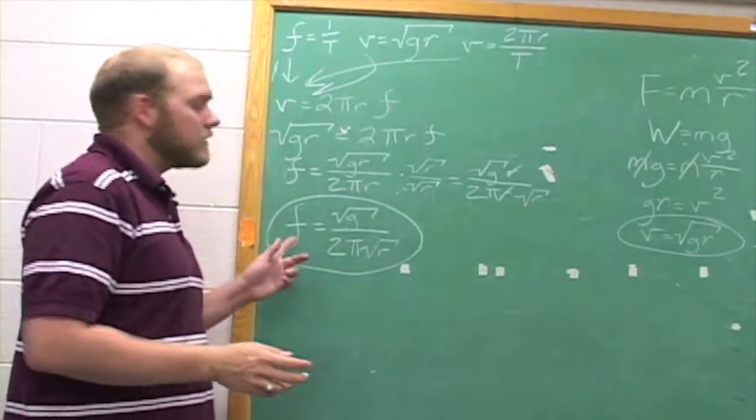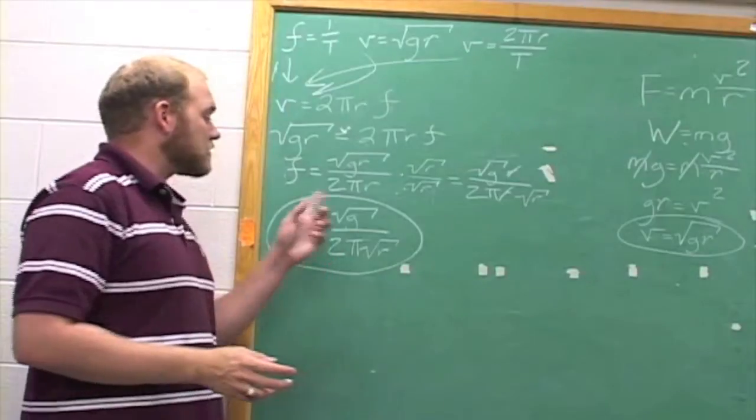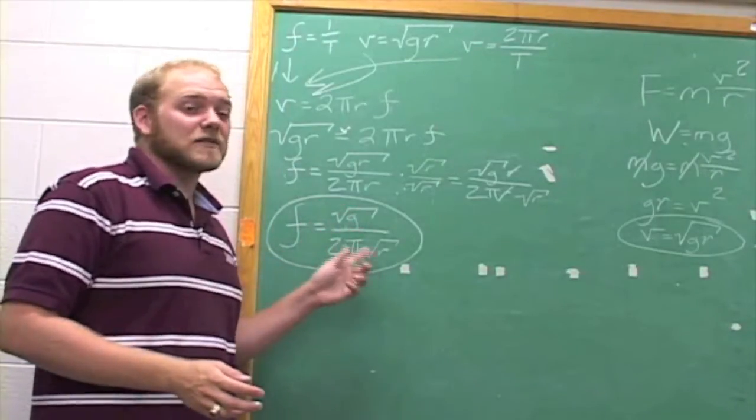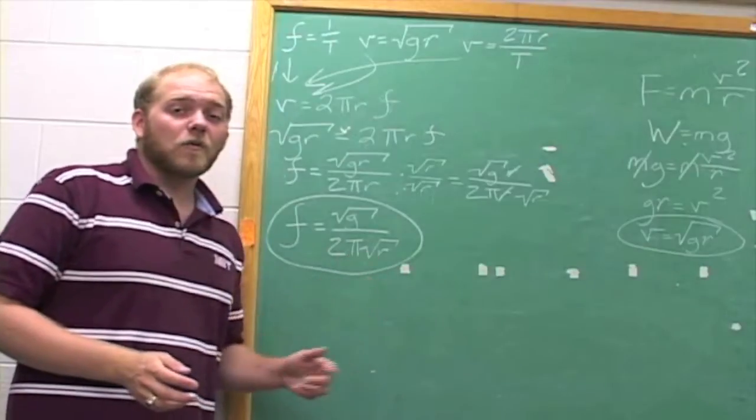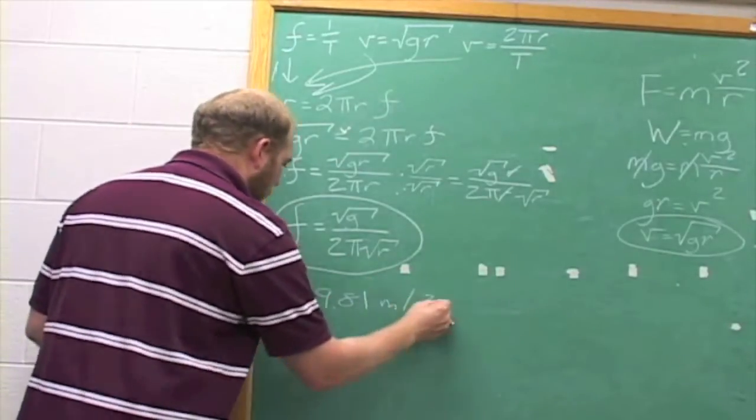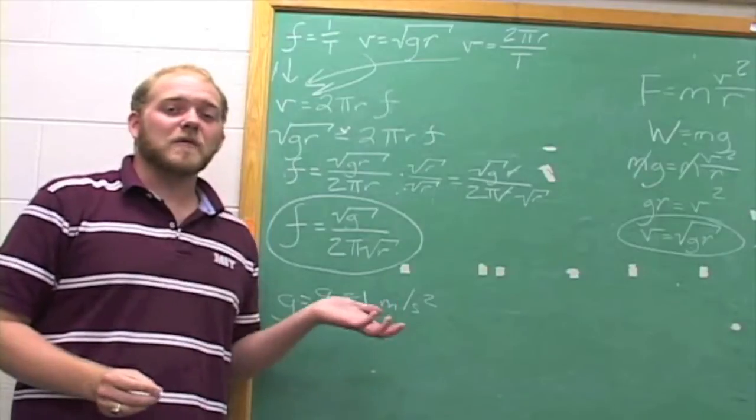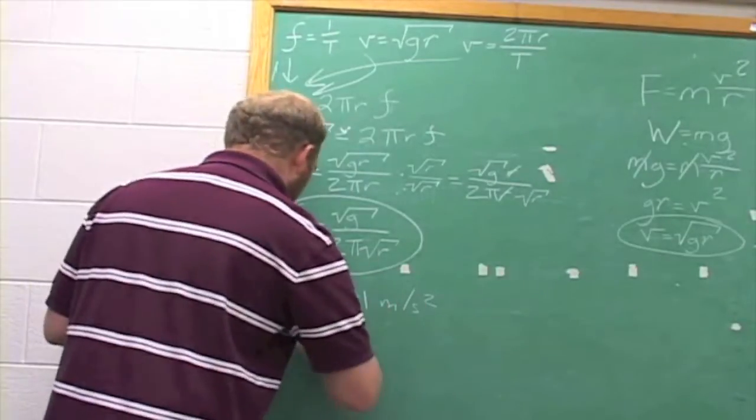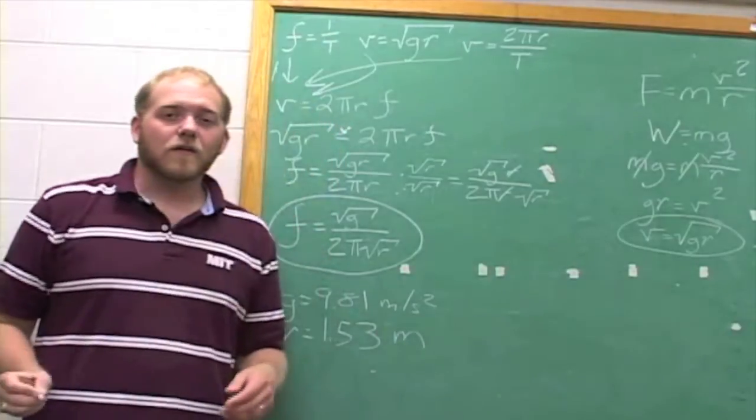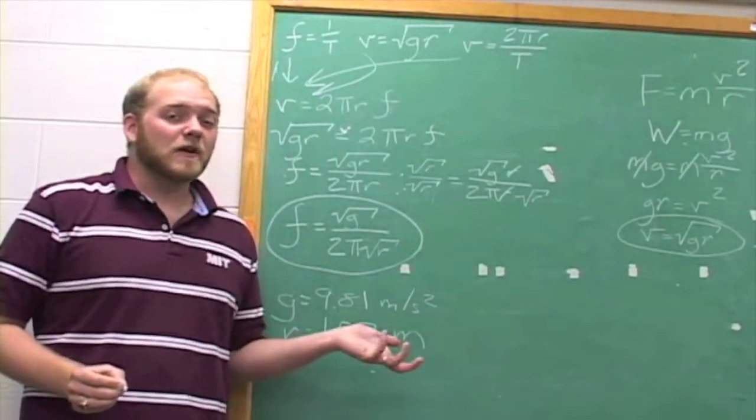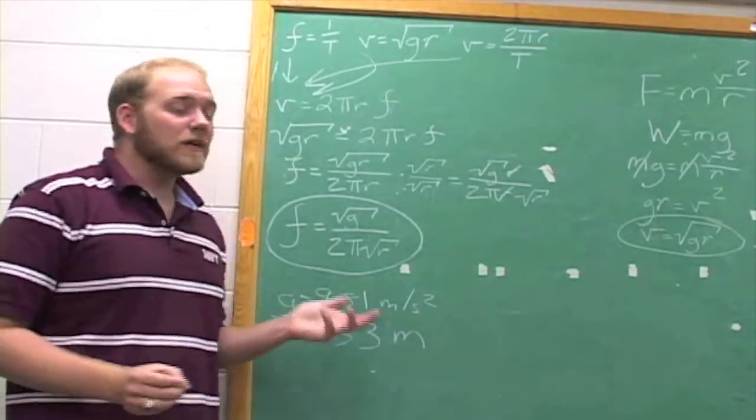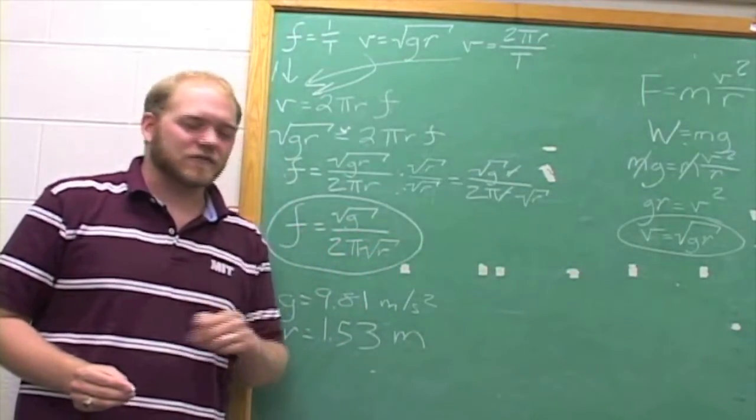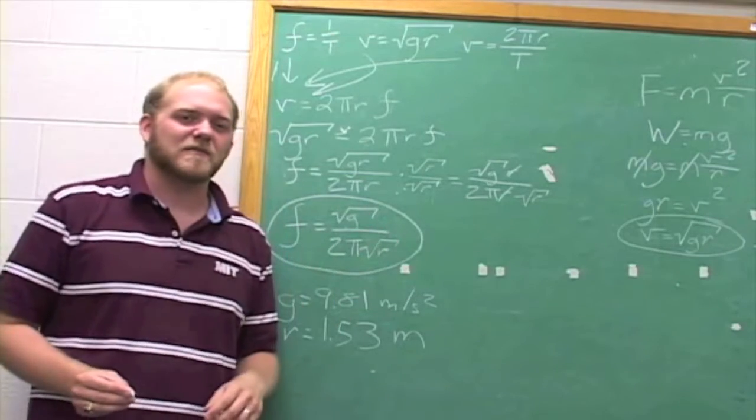So we find that the centrifuge frequency is equal to the square root of g divided by 2 times pi times the square root of r. So we know g, 9.81 meters per second squared, and we know r, 1.53 meters. So with these two values, we can solve for the value of frequency. Why don't you take a minute to solve this yourself? Don't worry, we'll come back with the answer in just a minute.